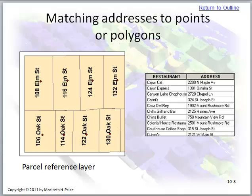Here we have a parcel reference layer, and we're matching addresses to polygons, as opposed to a street address layer. We'll be using a street system, so the streets layer will be the reference.